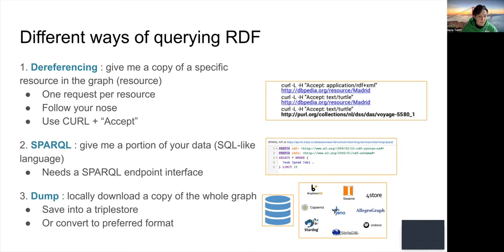The second approach is SPARQL. SPARQL is a query language which allows you to request a given portion of your data — more of a database-like language, like SQL. The problem with this approach is that you always need to identify an endpoint interface: you need to know where the knowledge graph lies and whether there is an open endpoint available where you can run your SPARQL queries. You can also request a full copy of your RDF graph, called a dump, which gives you a local copy of the whole graph that you can save into your own triple store and run locally, which is much faster.